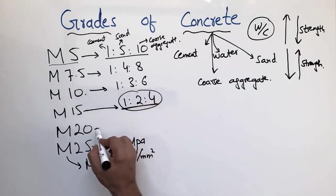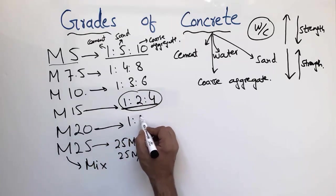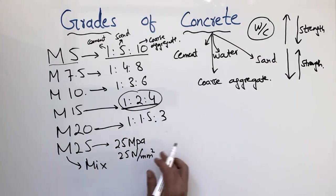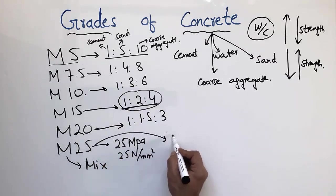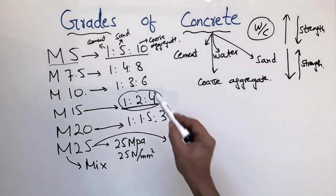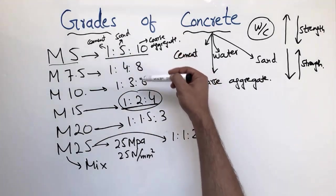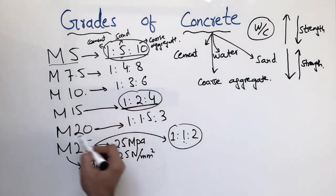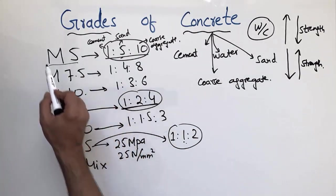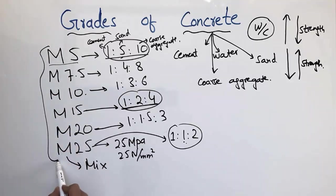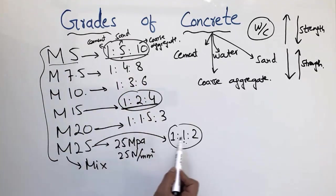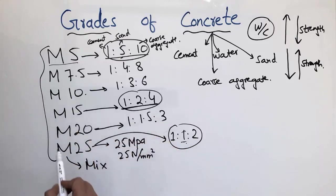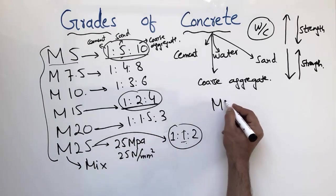For M20, we use 1:1.5:3, and for M25 we use a corresponding ratio. You can see that the ratio is decreasing as we go toward higher-strength concrete. These grades from M5 to M25 are called nominal mixes because they are defined by a fixed ratio — if you achieve this ratio, you can achieve your desired strength.